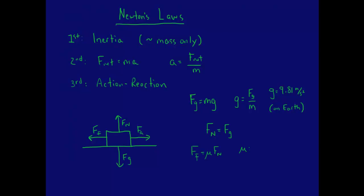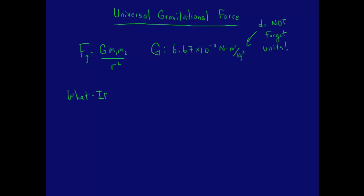The equation for the friction force is ff equals mu fn. Mu is the coefficient of friction. Mu has no units. The equation for the universal gravitational force is fg equals g m1 m2 all over r squared. g is 6.67 times 10 to the negative 11 newtons meters squared per kilogram squared. Also remember the what-if strategy: plug in multipliers instead of actual numbers.